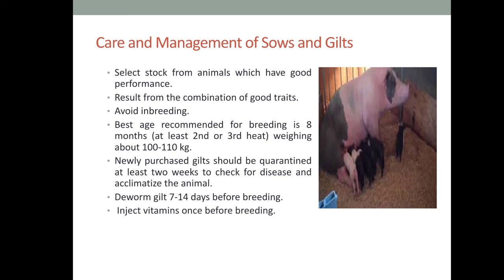Care and management of sows and gilts: select stock from animals with good performance. Choose sows that have good performance and good mothering ability, as results come from a combination of good genetics. Always avoid inbreeding, as it can cause diseases and many problems. The best age recommended for breeding is 8 months, at least the 2nd or 3rd heat, weighing about 100 to 110 kilograms.